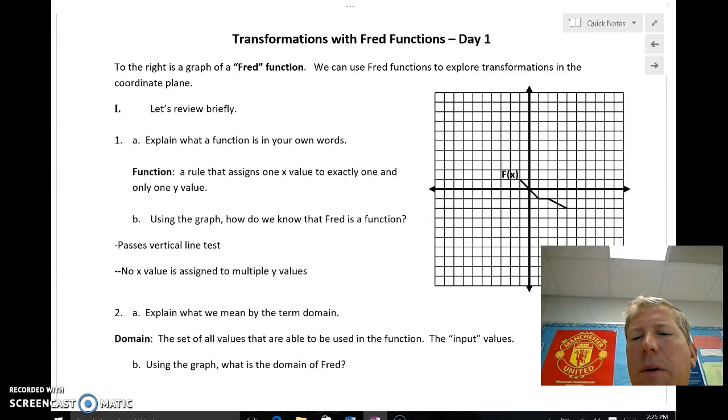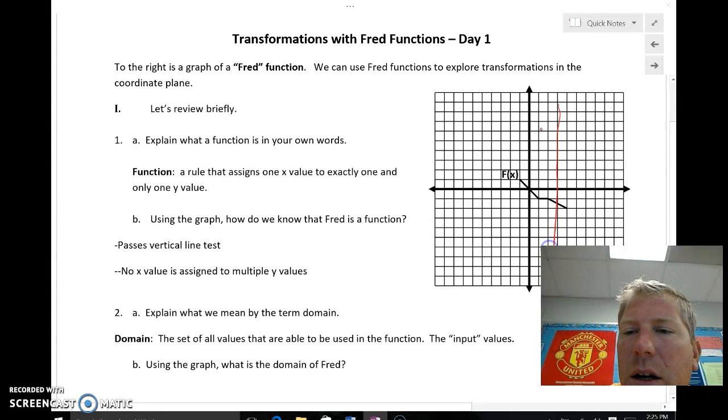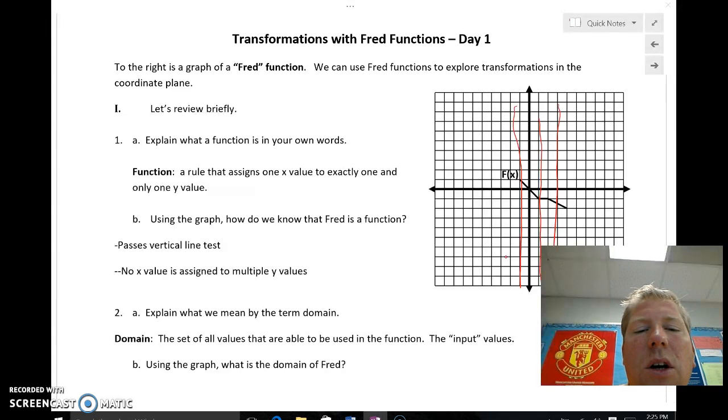It asks a little bit about this graph here, F of X. It asks how do you know it's a function, and I just put a couple of comments there. It passes the vertical line test, so I can draw a vertical line and never hit the graph more than one place. Another way of saying that would be no X value is assigned to multiple Y values.